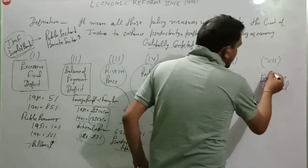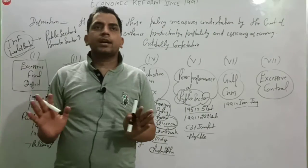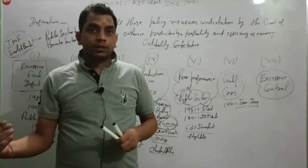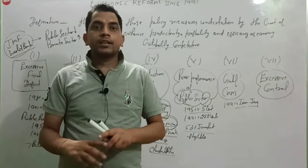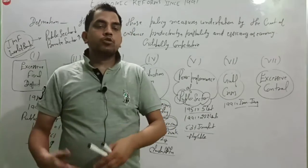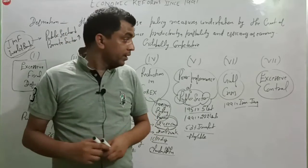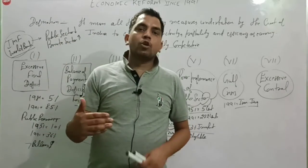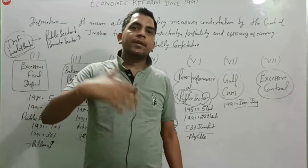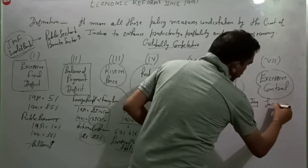The last point is excessive control. Excessive control means the government followed a Russian or socialist methodology regarding the sectors of the economy. In the planning model, there are three options: mixed economy, socialist economy, and capitalist economy. India followed the Russian socialist approach, which placed heavy limits and controls on the market.